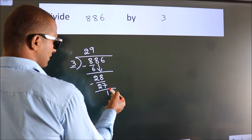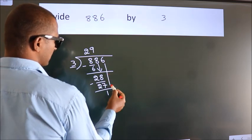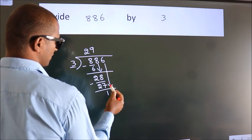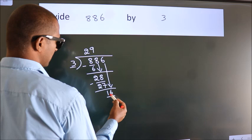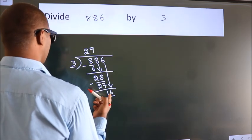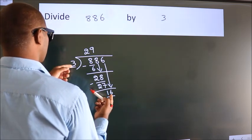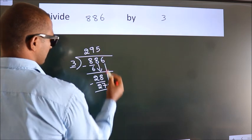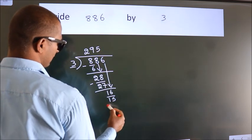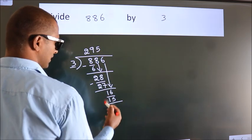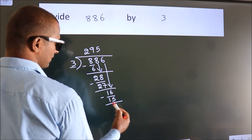After this, bring down the beside number. So 6 down. So 16. A number close to 16 in 3 table is 3 5s, 15. Now we subtract. We get 1.